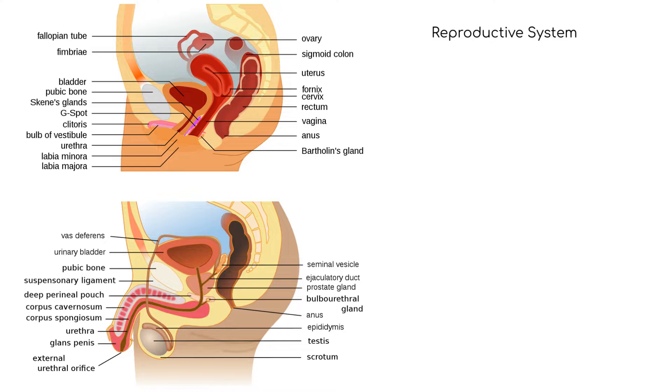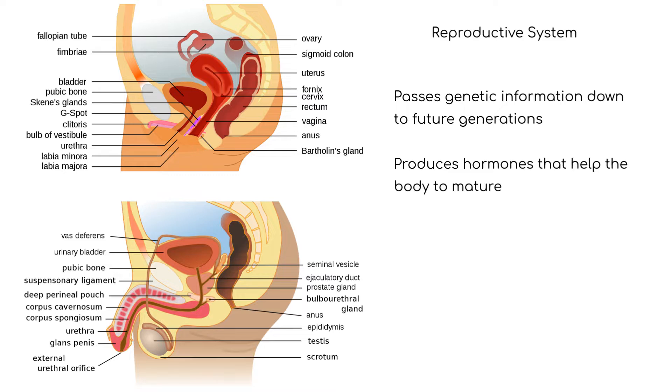The reproductive system passes genetic information down to future generations, as well as produce hormones that help the body to mature.